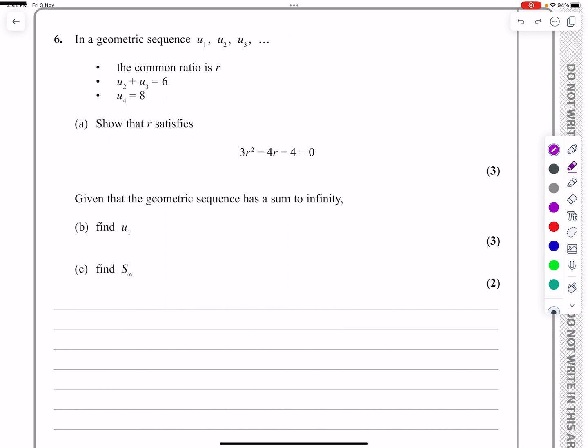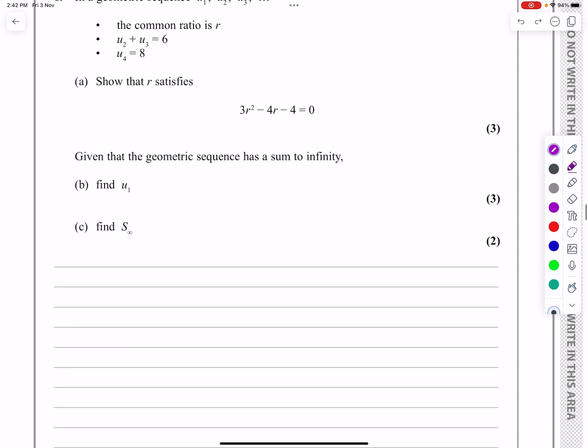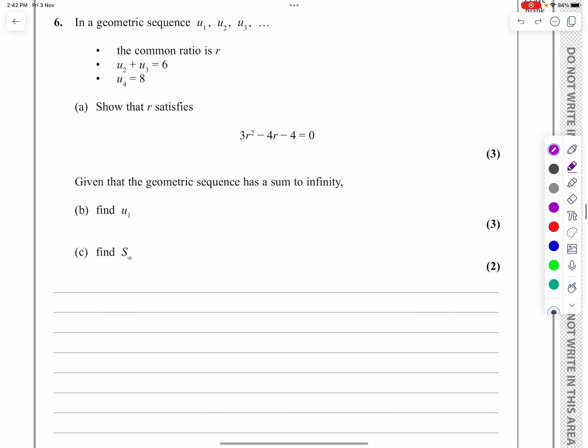So we've got this geometric sequence U1, U2, U3. They've told me the common ratio is equal to R. Well if that's true, then I can say in part A that U3 divided by U2 will equal R, and so would U4 divided by U3 equals R. I'm writing that down to remind myself that that's always true alongside any facts they give me.